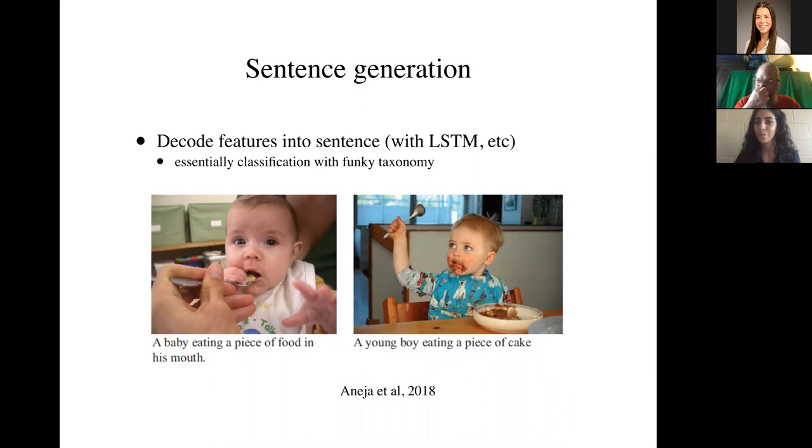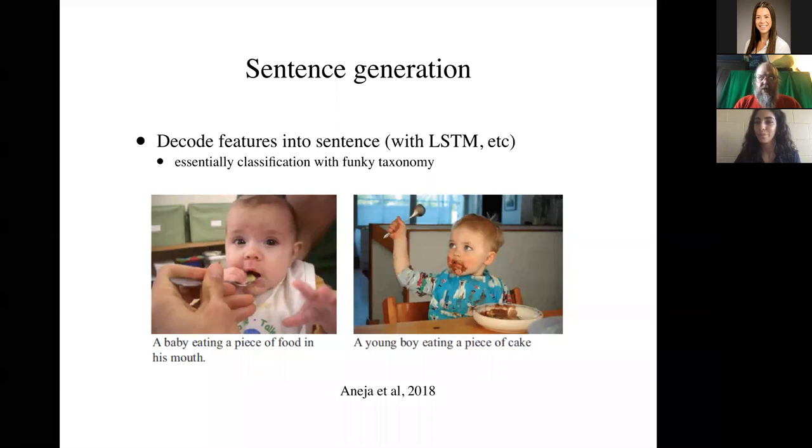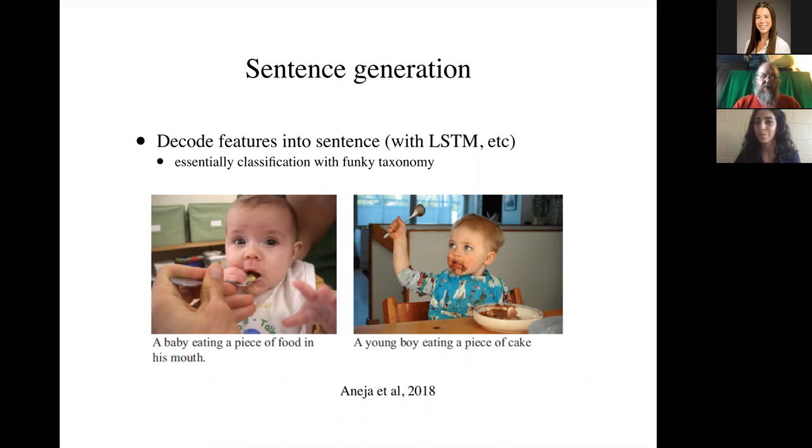An even more complex form of classification is where the label you produce actually takes the form of an entire sentence describing the image. So here, these can be produced now. It remains remarkably difficult to tell whether a sentence describing an image is right. And you need to keep in mind that there are many different sentences that describe an image that might be right. So evaluation remains a bit sticky. But we can in fact generate sentences describing images rather well. A baby eating a piece of food in his mouth. Lousy sentence. Correct description of the picture. A young boy eating a piece of cake. Actually not right. He's eating ice cream. Those of you with children will be familiar with that particular form of mess. But really pretty good.